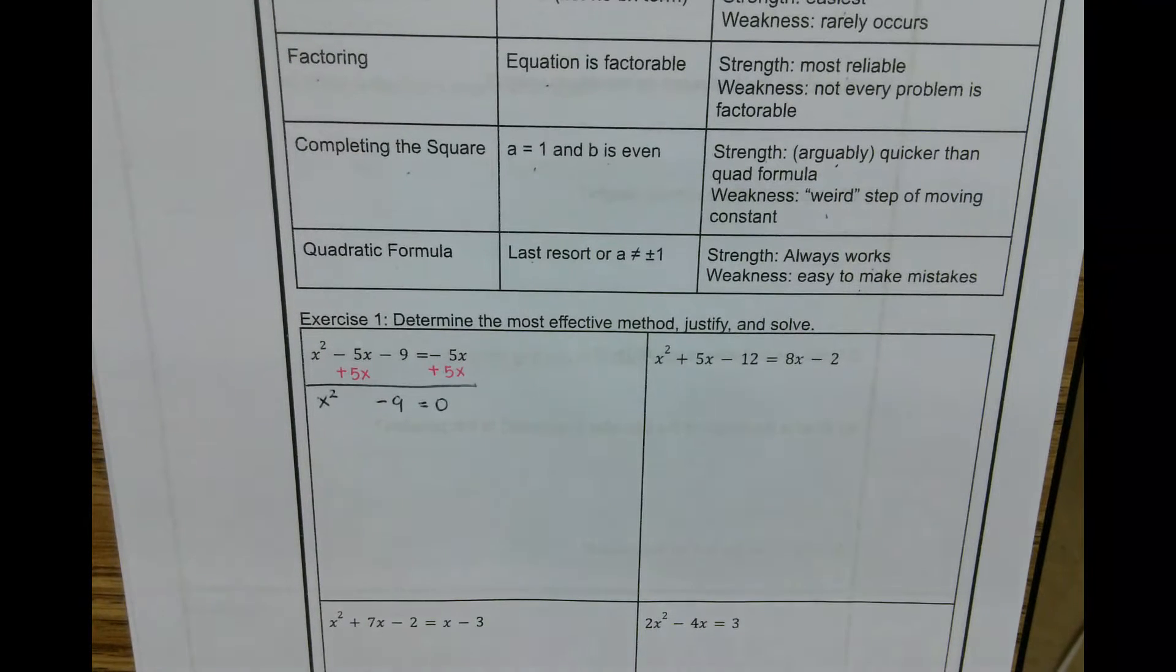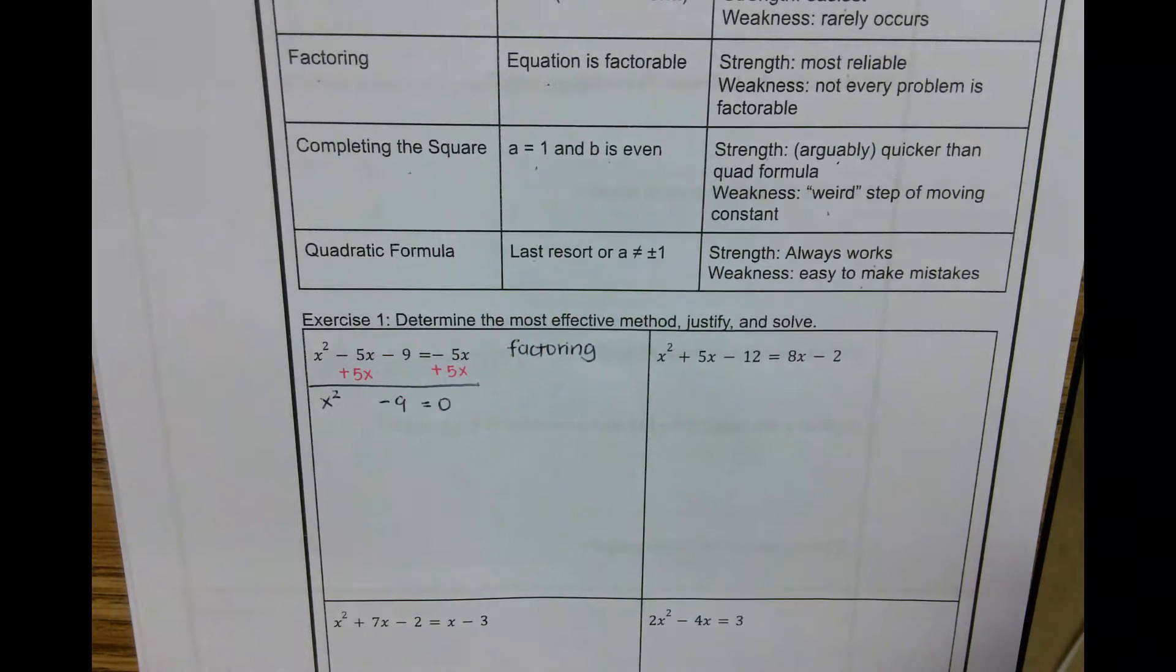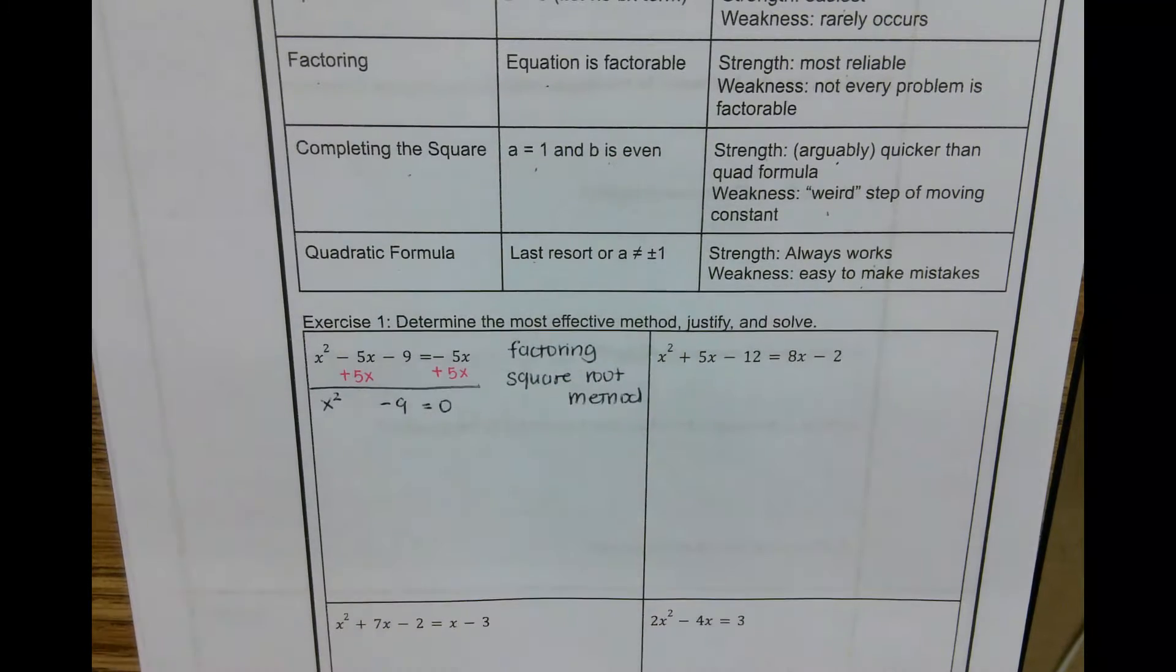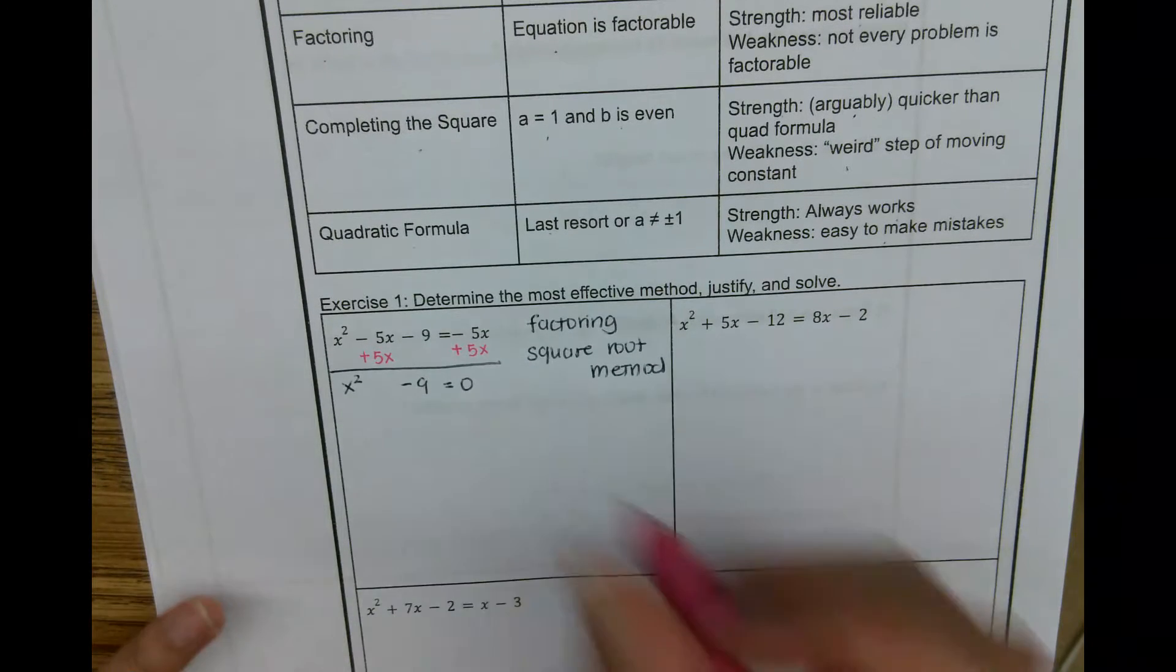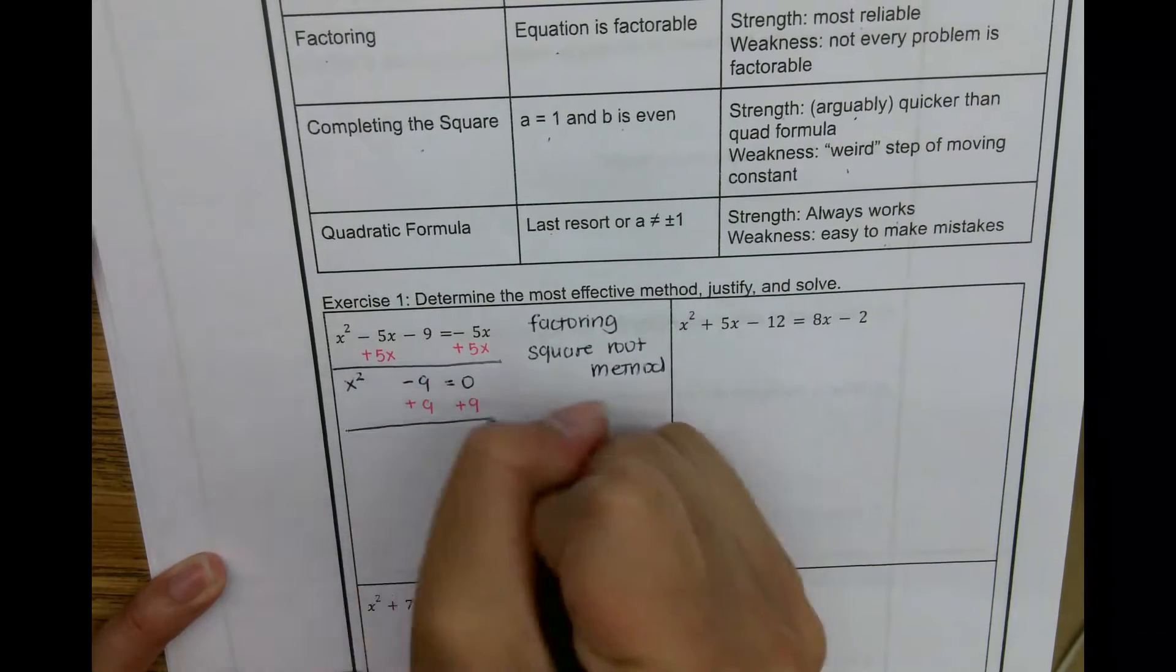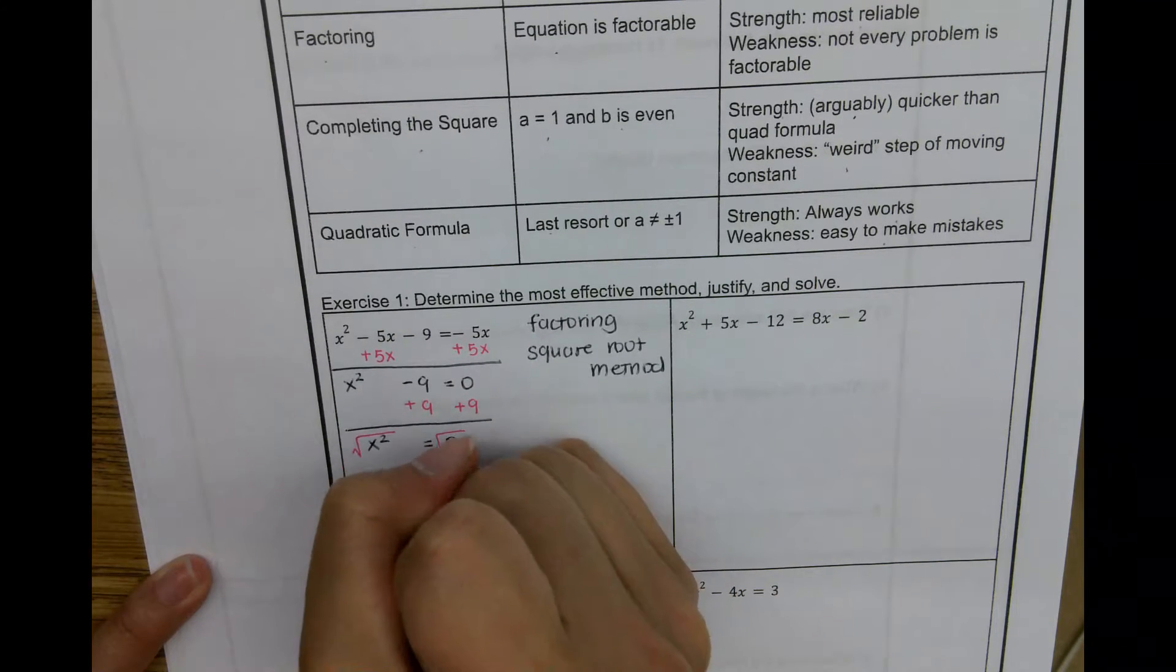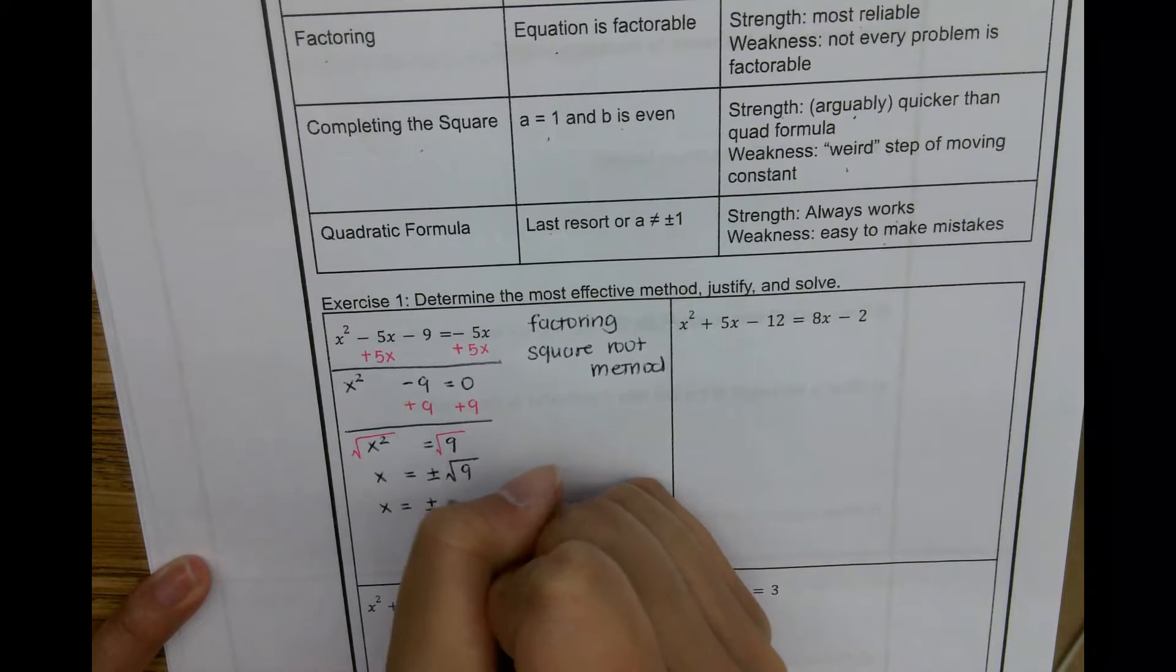So which method is best? Some might say factoring. This is a difference of two squares. It's super fast. Or that square root method, because there is no b and it's just x squared, nice and easy to go. So let's do it with the square root method. So I'm going to add 9 to both sides. x squared equals 9. Get rid of the square by square rooting it. This leaves me with x equals plus or minus square root of 9, which we know is 3. So we have two answers, positive 3 and negative 3.